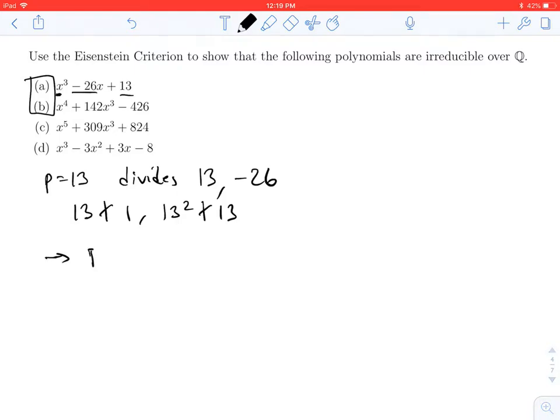Therefore, by the Eisenstein criterion, that implies x cubed minus 26x plus 13 is irreducible over Q. All right, so that was A.